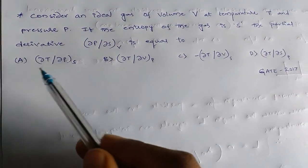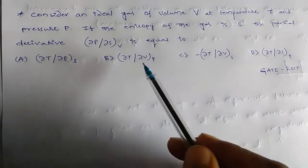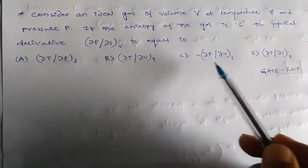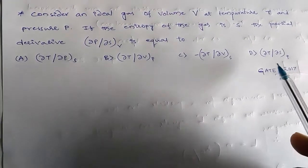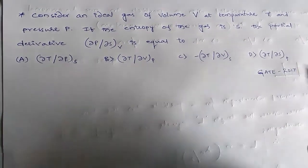So we have four options: A) ∂T/∂P at constant S, B) ∂T/∂V at constant P, C) -∂T/∂V at constant S, D) ∂T/∂S at constant P.